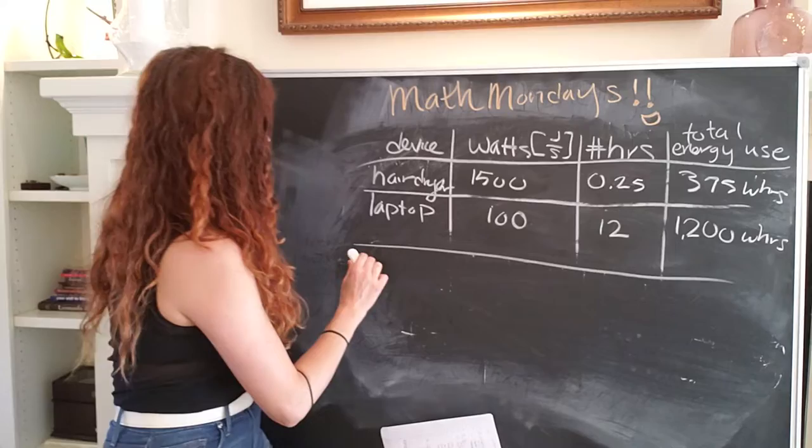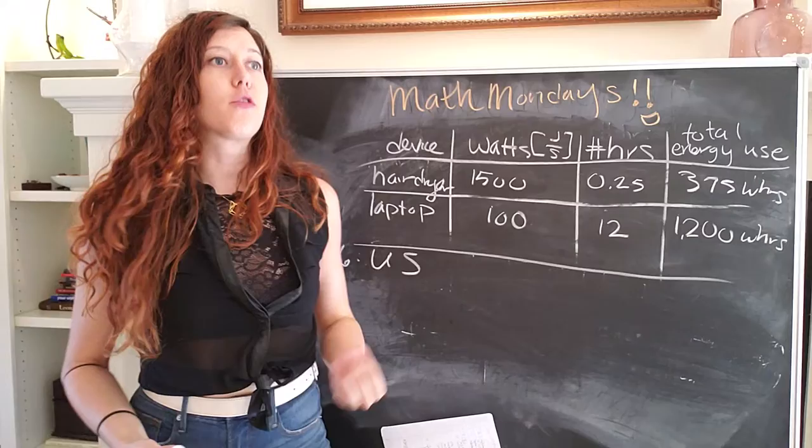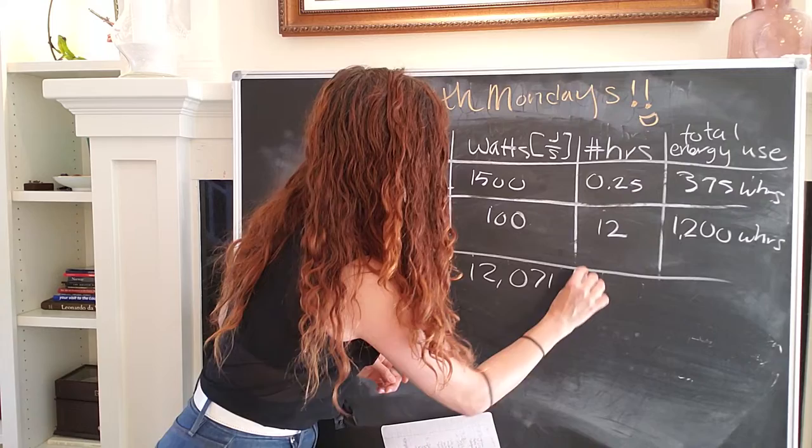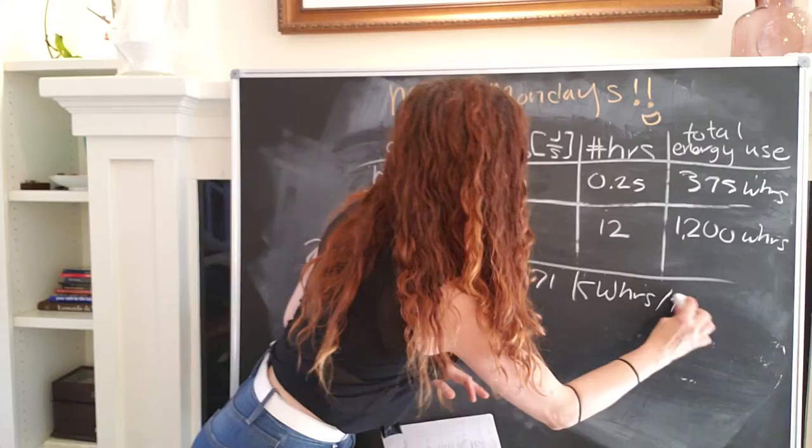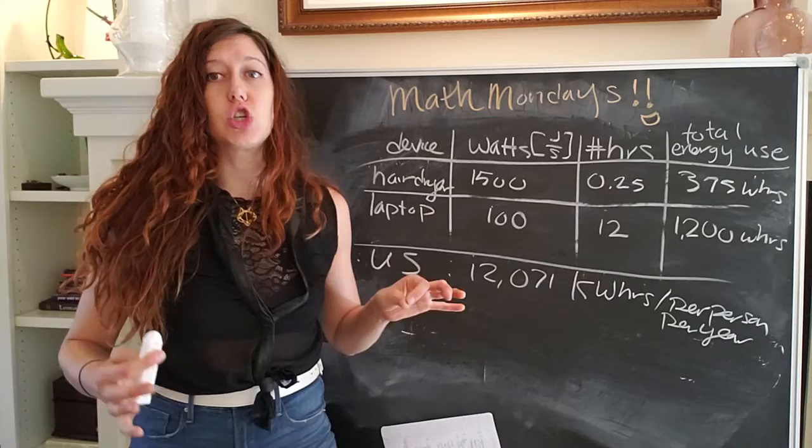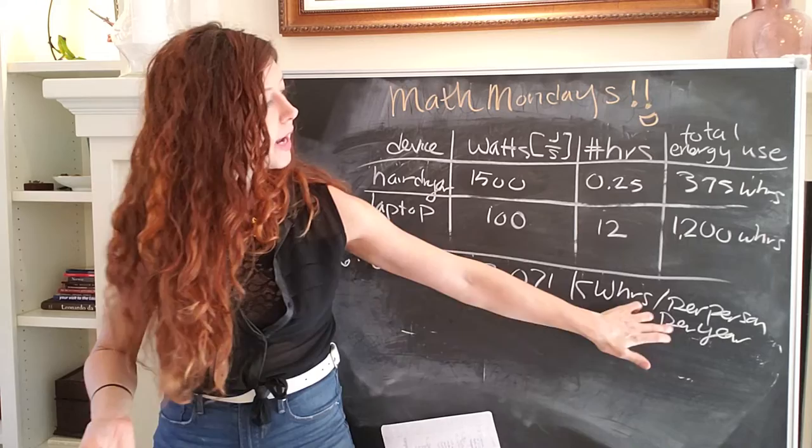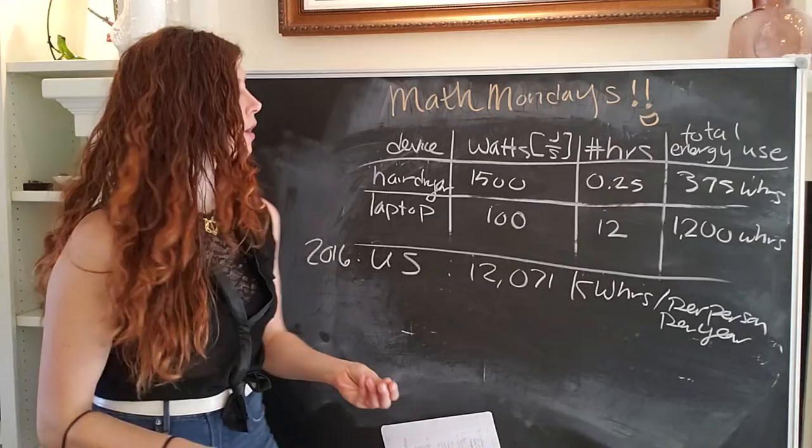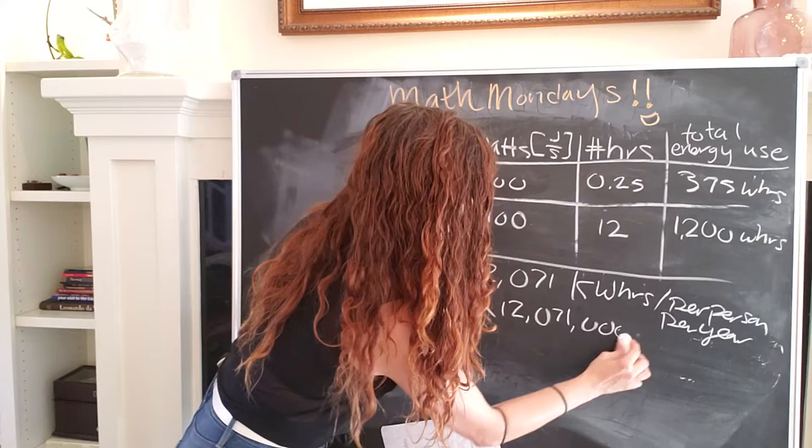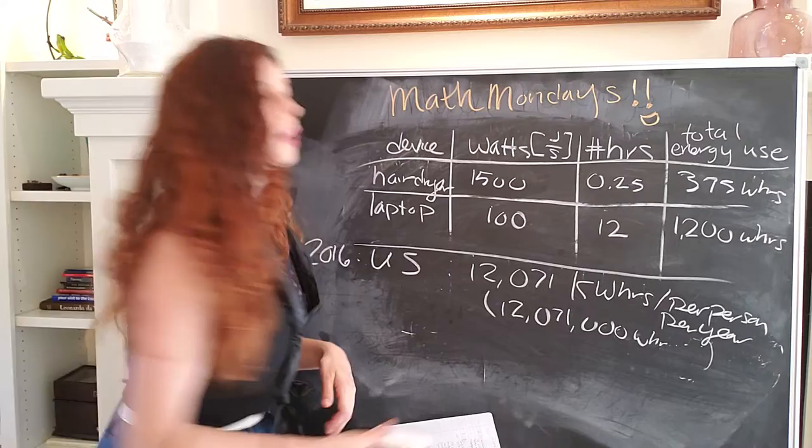So in the U.S. in 2016, the average energy consumption per person per year was about 12,071 kilowatt hours. And again, that is per person and per year. So on average, each American citizen consumes 12,071 kilowatt hours per year. Another way to say per person is per capita. And a quick note that kilo is actually times 10 to the three. So this would be 12 million 71,000 watt hours. And again, per person per year. So that's actually a lot of energy.